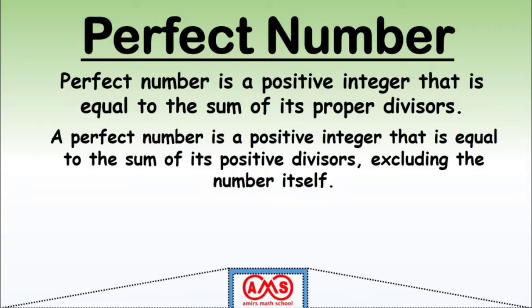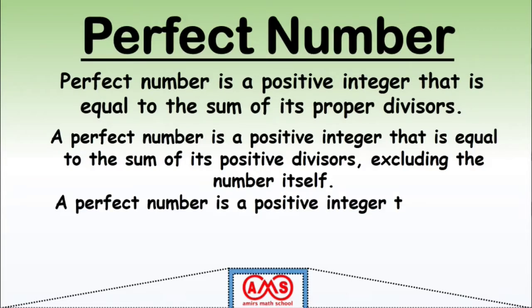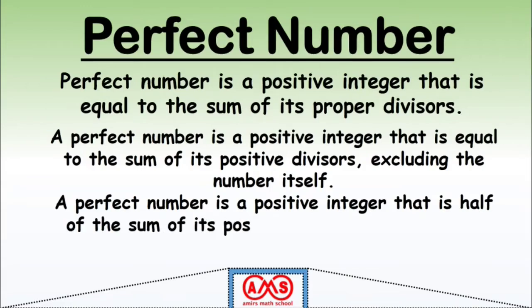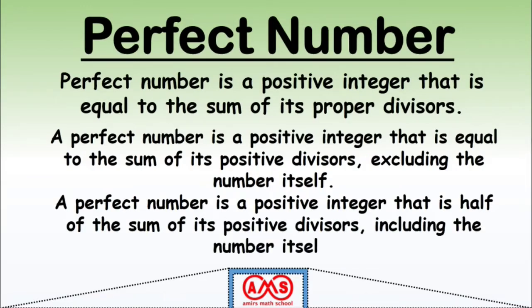Another way to state this definition: a perfect number is a positive integer that is half of the sum of its positive divisors including the number itself. In other words, if the sum of all positive divisors including the number itself is double that positive integer, then that positive integer is called a perfect number.